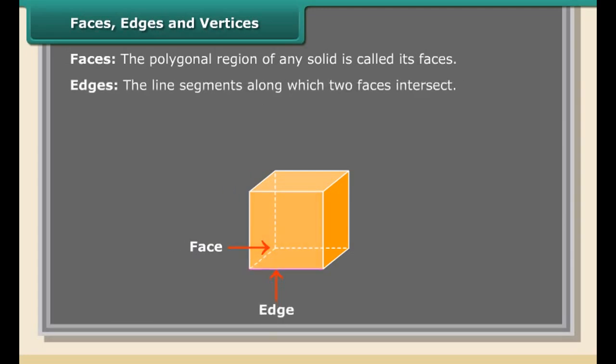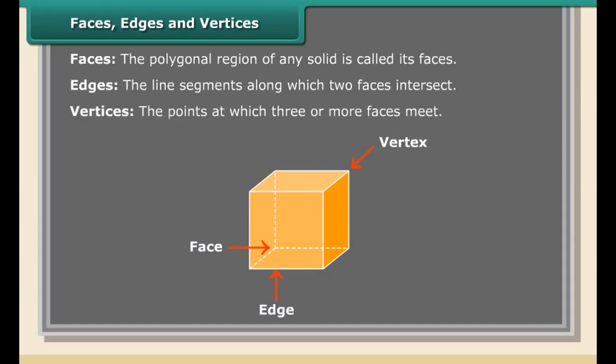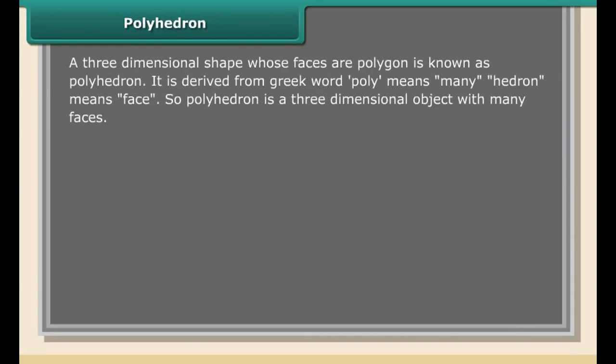This map is drawn by Ravi. Ravi uses different symbols for different landmarks. Longer line segments have been drawn for longer distances and shorter line segments for shorter distances. He has drawn the map with a scale, symbols, and mentioning distances, which has helped us to read the map easily.